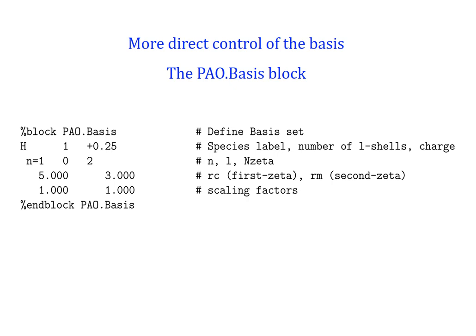In the following line you have the first shell: N equals 1, angular momentum zero — that would be a 1s orbital — and 2 is double zeta. After that you have the numbers 5 and 3: 5 is the cutoff radius of the minimal basis, and 3 is the matching radius of the second zeta. With that you would have just a double zeta for this hydrogen with no polarization. The last two numbers are optional and are scaling factors, which is something very traditionally used in quantum chemistry — once you generate the basis functions, you can scale, contract, or expand them a bit.